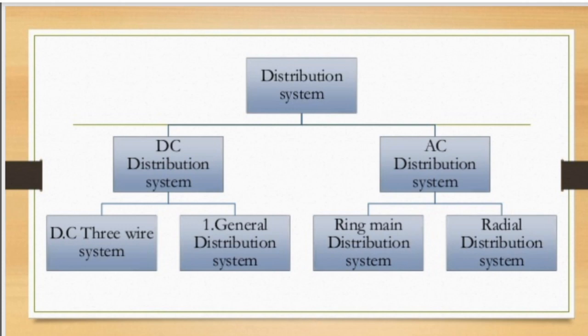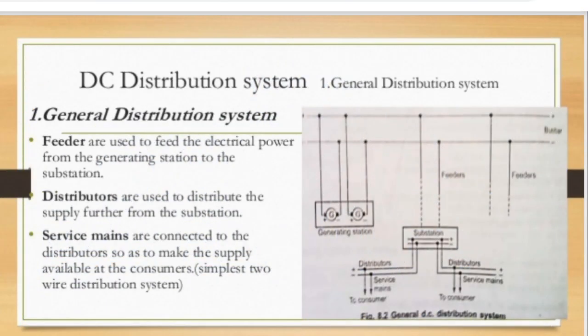A general distribution system consists of three main parts: feeder, distributor, and service mains. Feeders are conductors used to feed electrical power from the generating station to the substation, or from the substation to the distribution transformer. Feeders are generally used to transfer power from substation to distribution transformer.